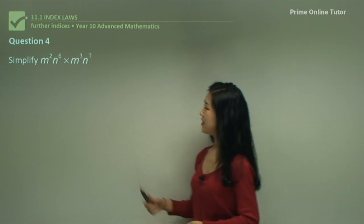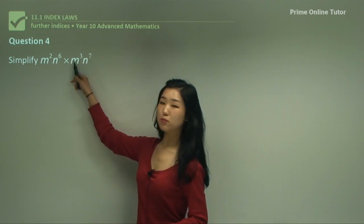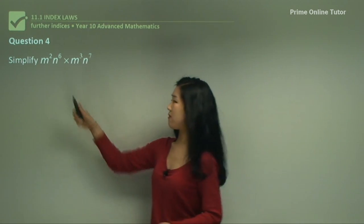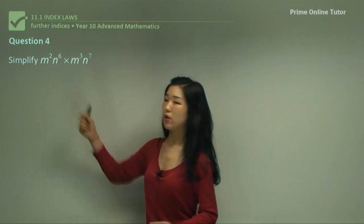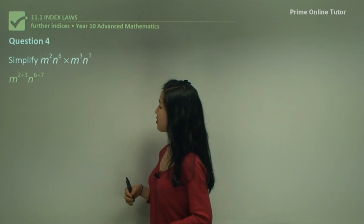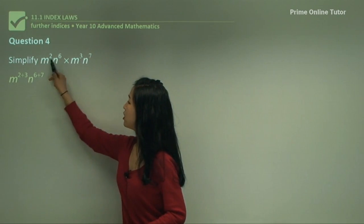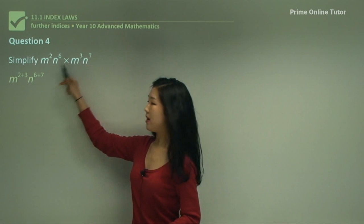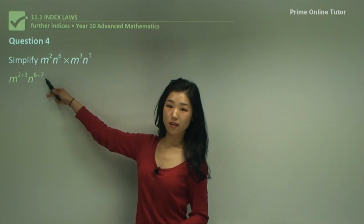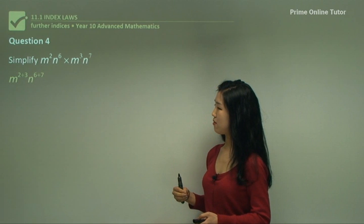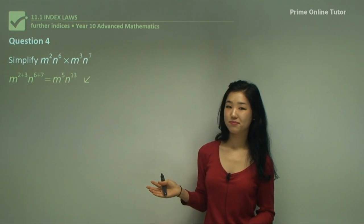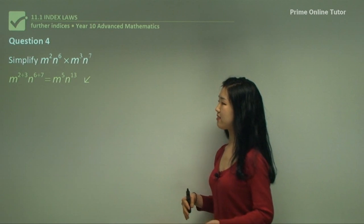Question four. We're multiplying again with two different bases, m and n. So we match the m's together and the n's together: m to the power of 2 plus 3, and n to the power of 6 plus 7. Add the indices together for the same base and simplify. It's very easy.